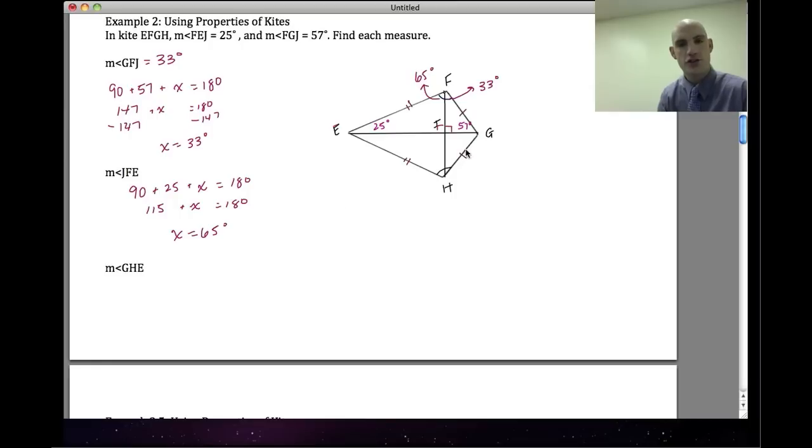And when they ask me in this last problem to find GHE, well, I know that this whole angle, the measure of GHE, is equal to the measure of angle GFE. Well, the measure of angle GFE is equal to 65 plus 33, which is 98. And so GHE must equal 98 degrees, because a kite has exactly one pair of angles that are congruent and they're opposite of each other.